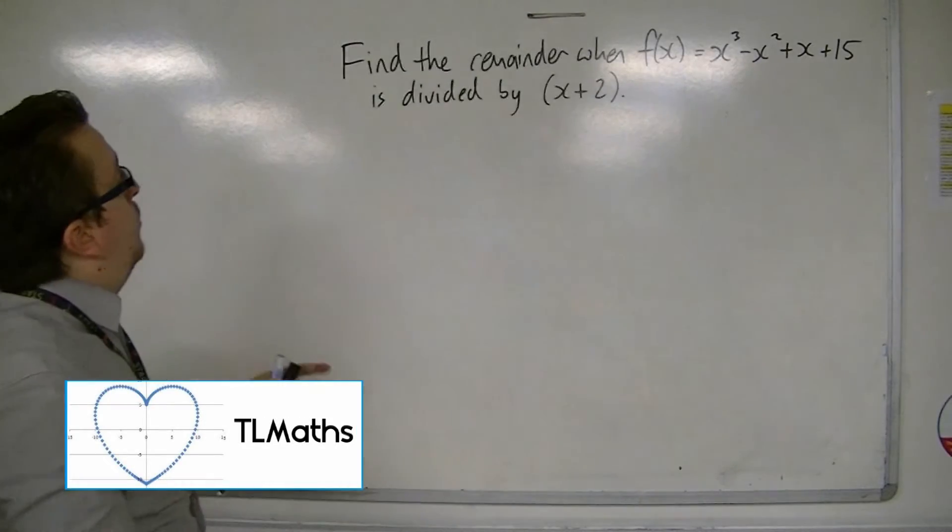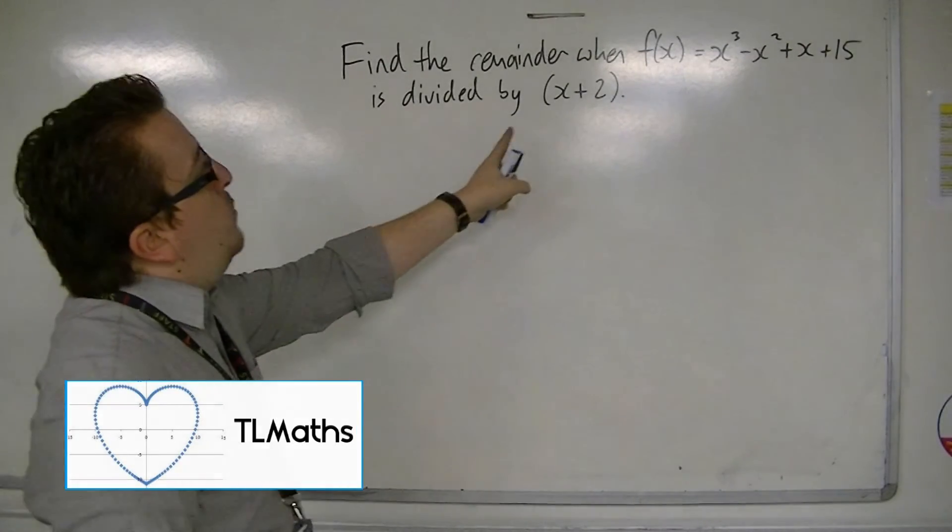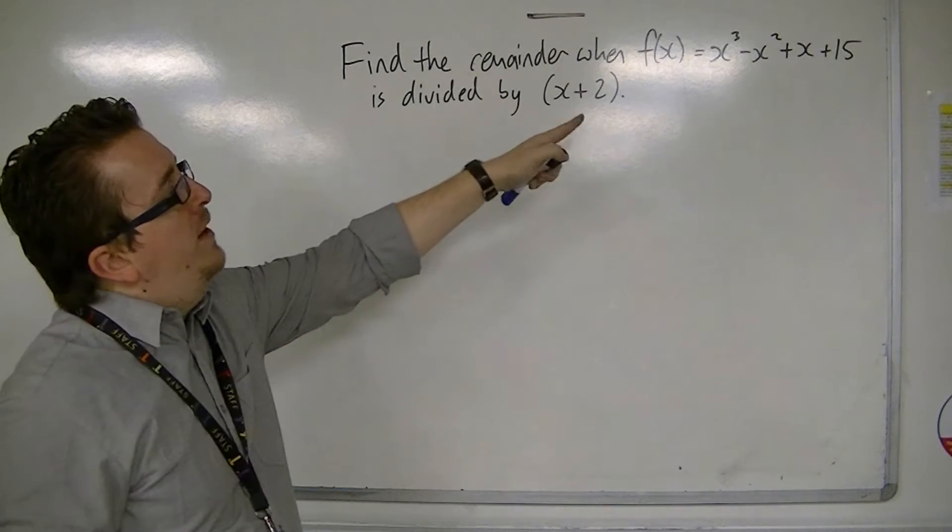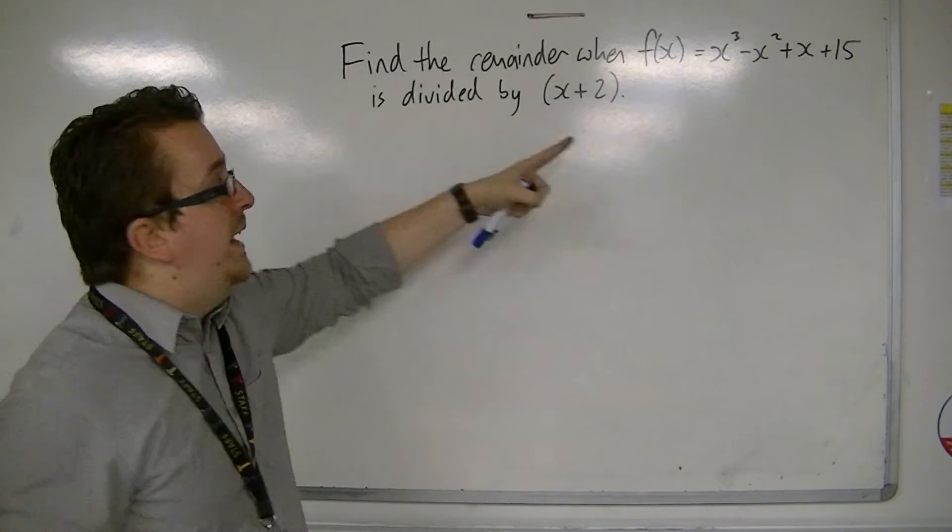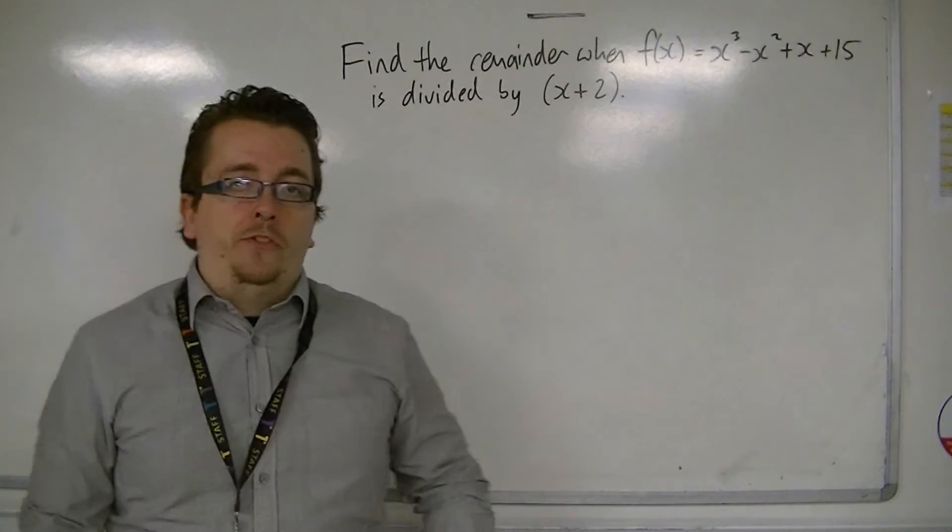Okay, this example, we're asked to find the remainder when f(x) is equal to x cubed minus x squared plus x plus 15 is divided by x plus 2.